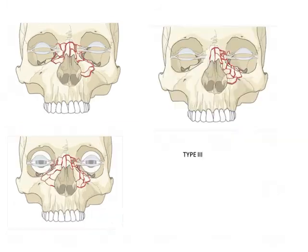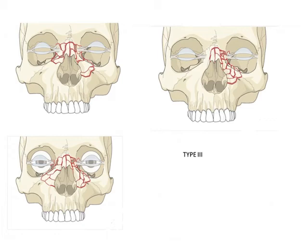Type 3 fractures are those in which there is no possibility of reducing the fracture at all — there are so many fragments that it is impossible to reduce them together. The canthal ligament has shown displacement and has lost its attachment to the bone. The first priority in type 3 is to reattach the medial canthal ligament. The prognosis is poorer due to significant bone loss, often requiring bone grafts to reconstruct the orbital floor.